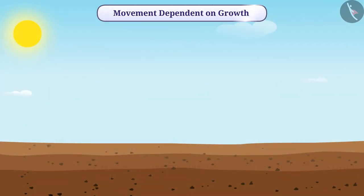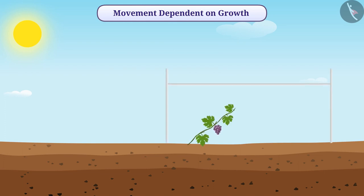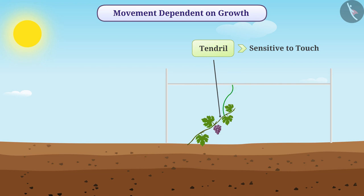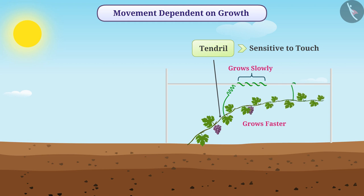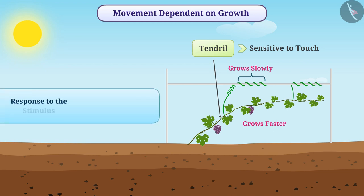Movement dependent on growth: in some plants such as grape plants, tendrils are sensitive to touch. When a part of the tendril comes into contact with a base, the part of the tendril in touch with the base grows slowly while the part away from the base grows faster. As a result, the tendril circles around the base and climbs over it. The response has a direct relation with growth, and such movement is called growth-dependent movement.